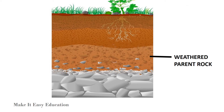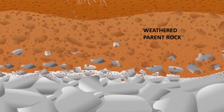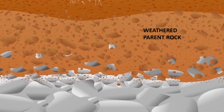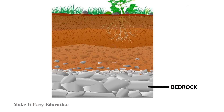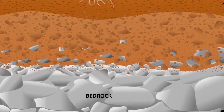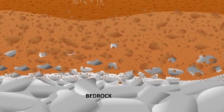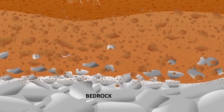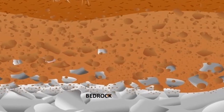Weathered parent rock is below the subsoil. This layer has broken pieces of rocks and does not have any plants or organic matter. Bedrock is the bottom layer of soil — it is very deep inside the earth. This is the hardest layer. It consists of unweathered parent rock and supports all layers above it.